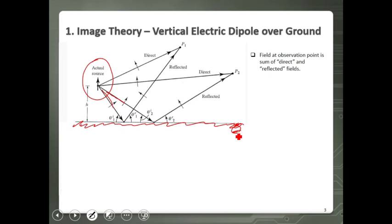If we study the far field or the electromagnetic fields generated by this dipole, we can consider two different points. At observation point P1, the total field is the sum of the direct path field plus the reflected field coming from the ground plane. At P2, we have the same situation — there are two paths the field can take from the antenna location to the observation point.